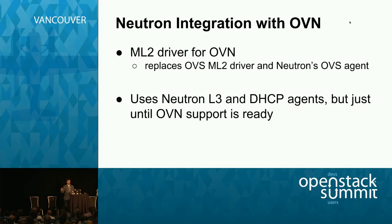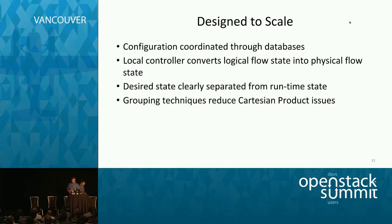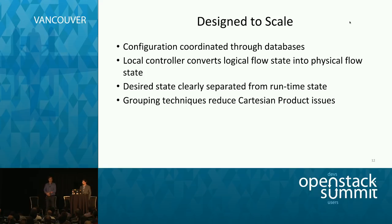The way OVN works with Neutron: we have an ML2 driver that replaces the OVS ML2 driver and Neutron's OVS agent. Today it still uses Neutron's L3 and DHCP agents while we implement those features in OVN, but once complete those agents will no longer be needed. One of the most important things we recognized in designing OVN was that it needed to scale — these systems often fail when reaching large numbers of hypervisors and VMs. We applied lessons learned from building previous systems.